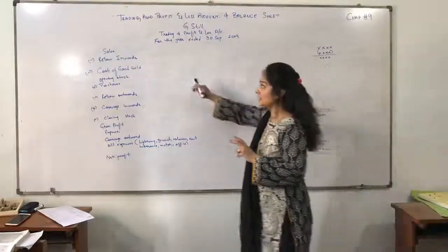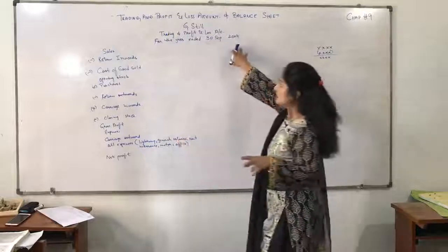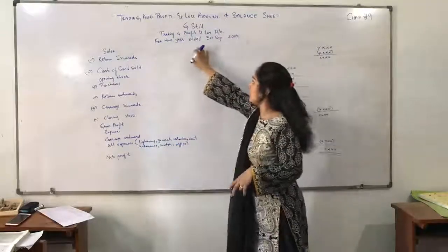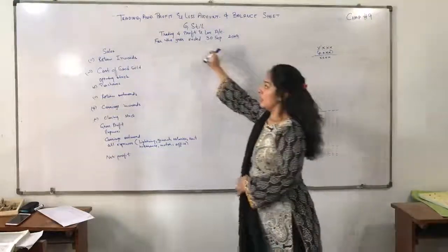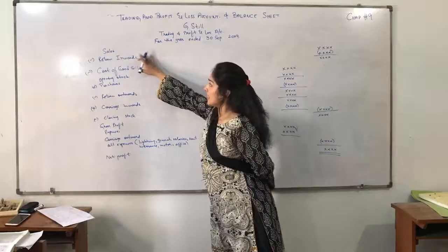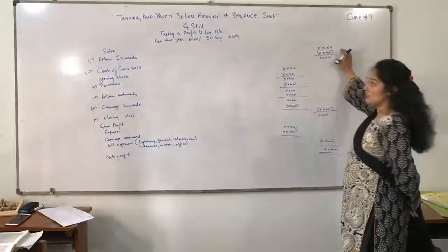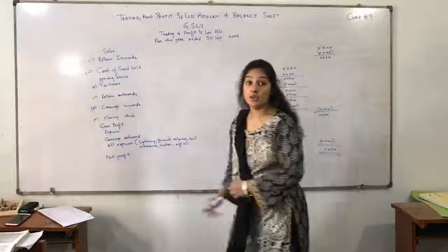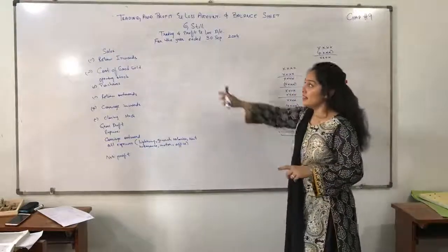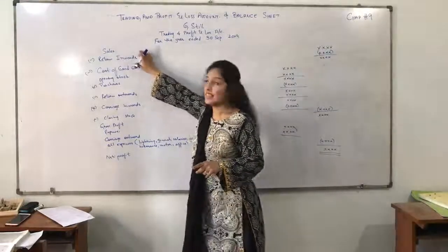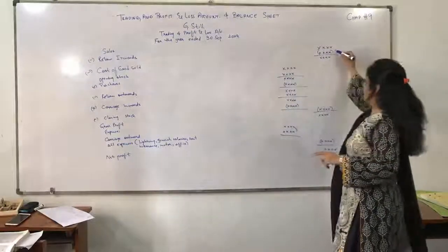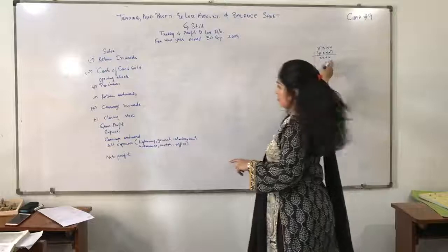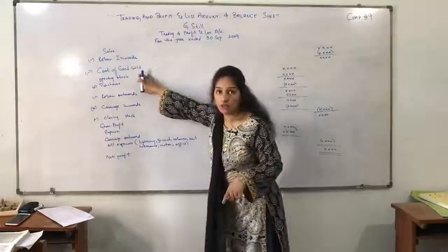This is an example — G-Strel Company trading profit and loss account for the year ending 30th September. Now, this is the Sales section. I have written down the amount A here. Then, Return Inwards — as I told you earlier, Return Inwards will be subtracted from the sales item. I have entered the Return Inwards amount and it will be subtracted to give us a net sales figure. Now we have the Cost of Goods Sold.